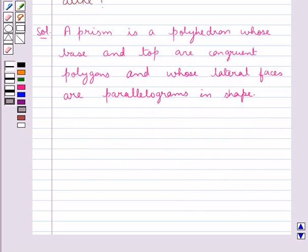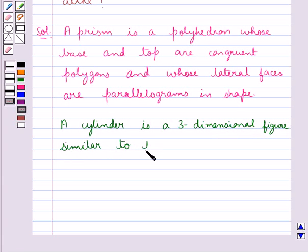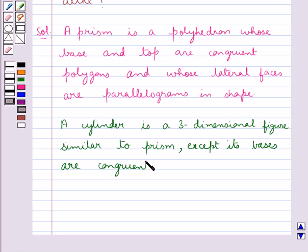Let's see what a cylinder is. A cylinder is a three-dimensional figure similar to a prism, except its bases are congruent circles instead of polygons.